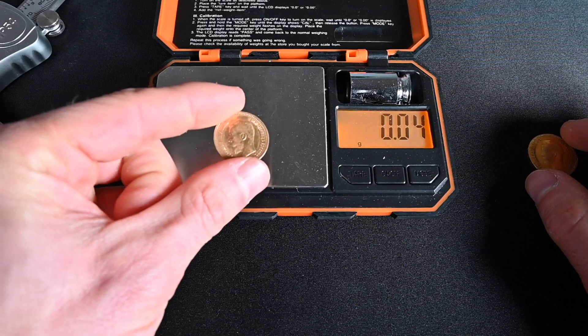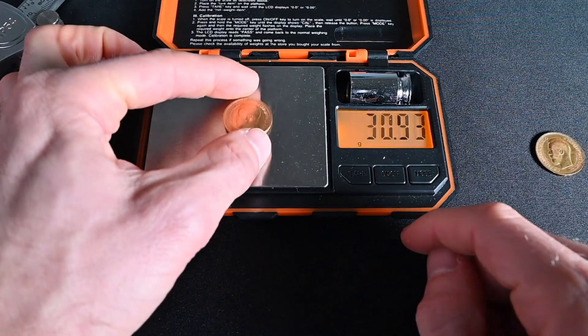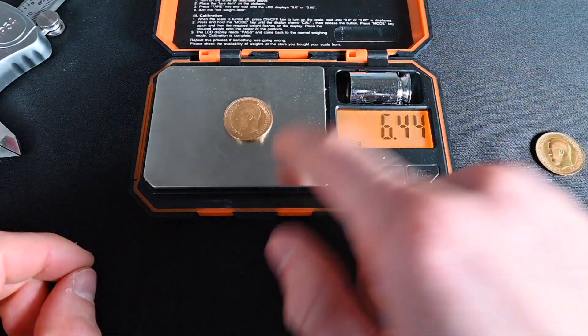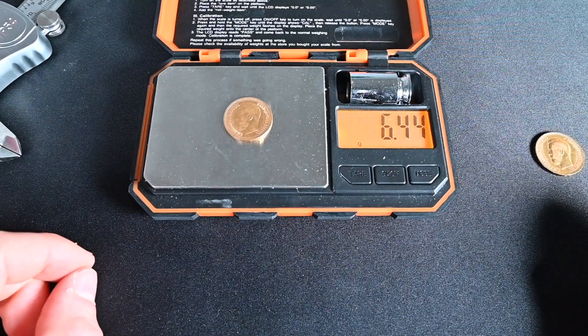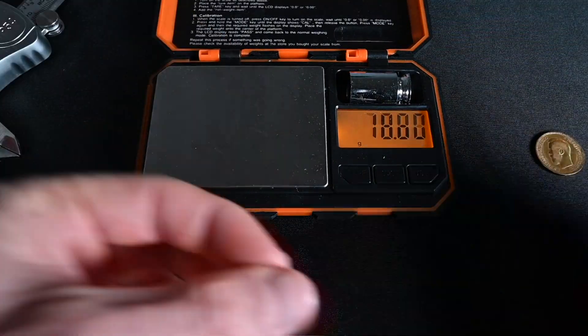This one, the 7.5 rubles, this one is supposed to be 6.45 grams. So you'll have to zero that out. And let's see what this says. 6.44. That is dang close. And again, like I said, if I push on it, maybe I could even get it up to the correct. Yep, there we go. Or close enough, right? So these coins, in terms of weight, are definitely legit.